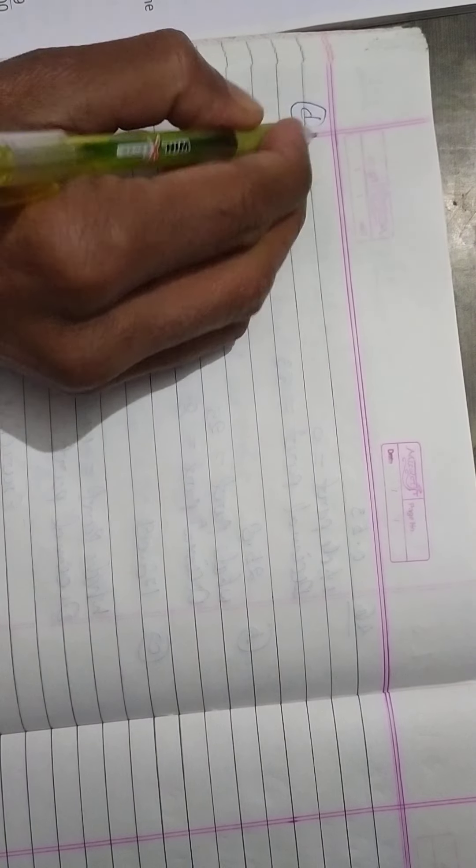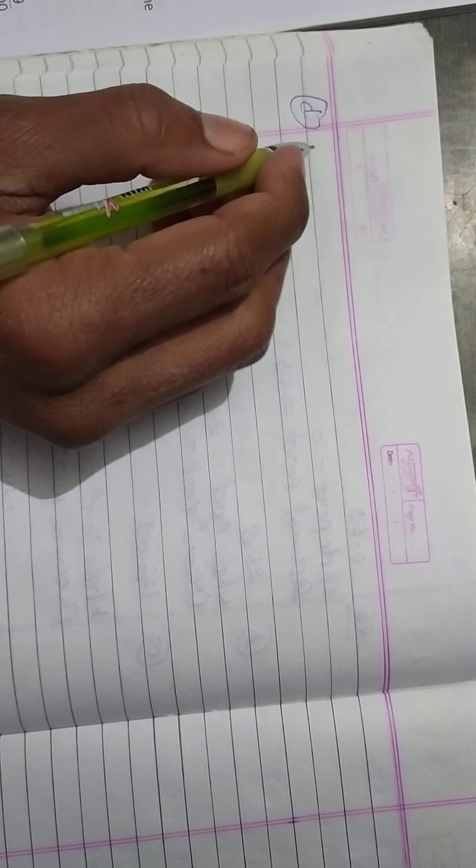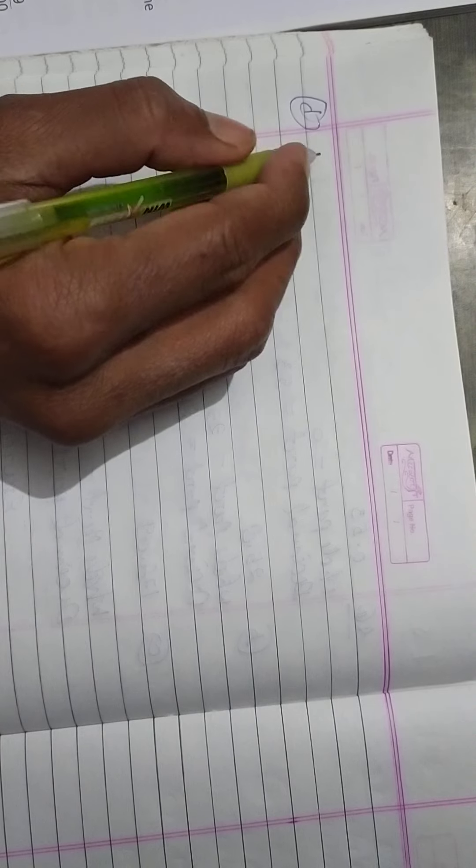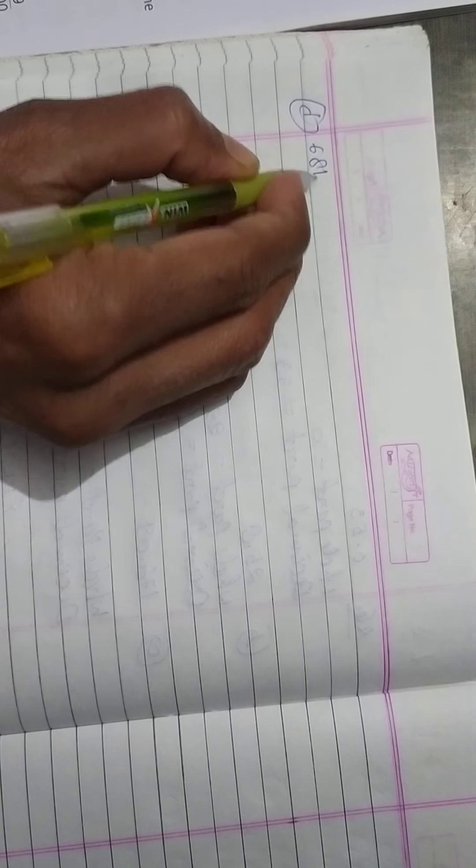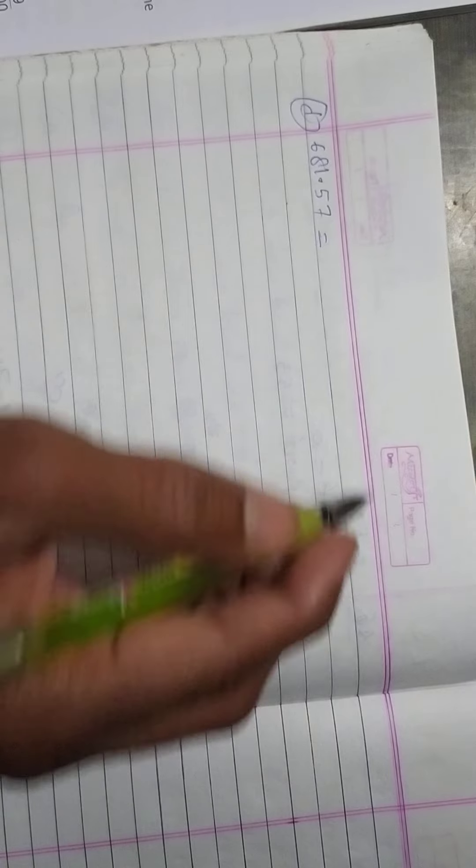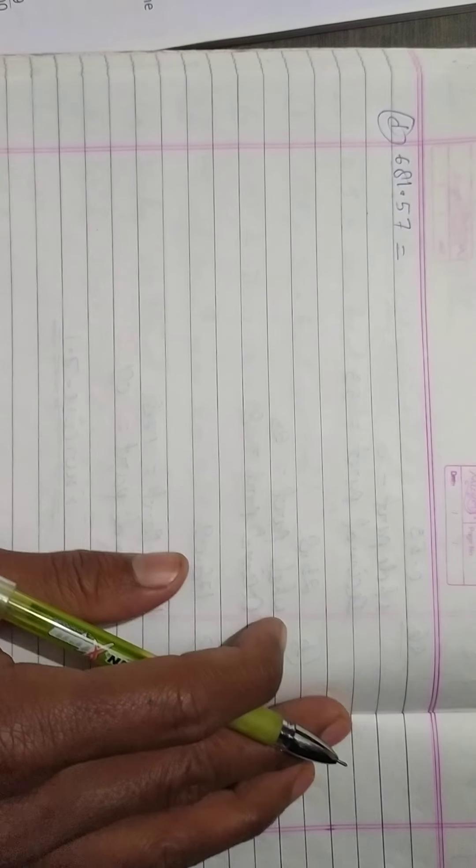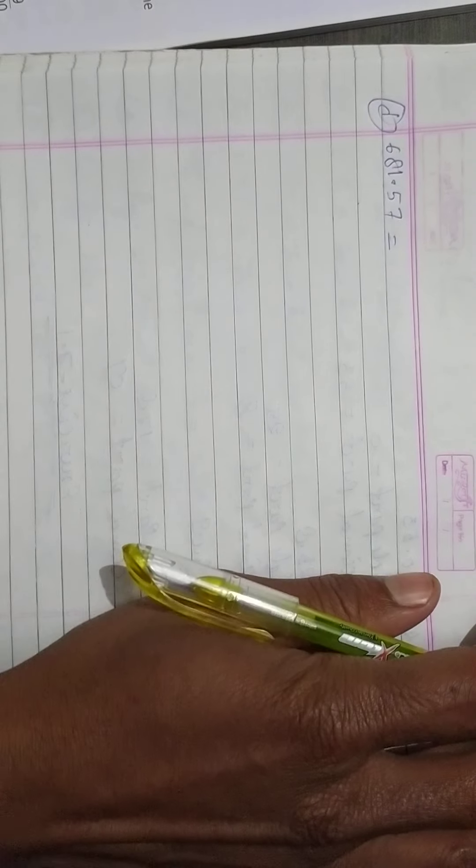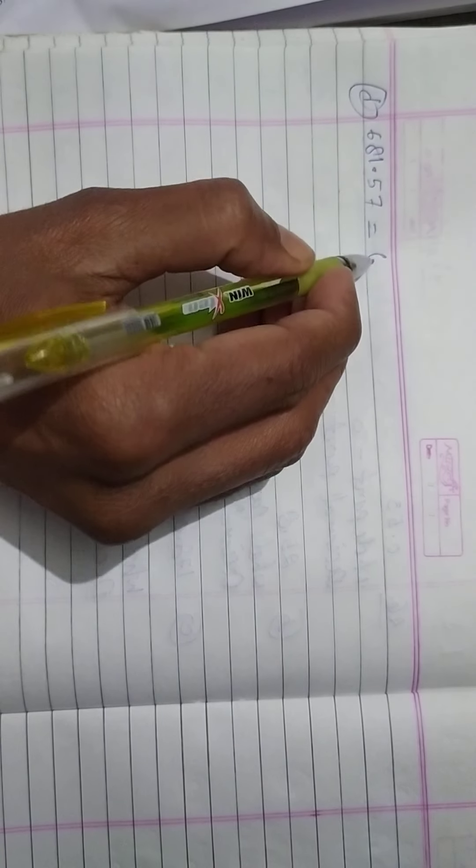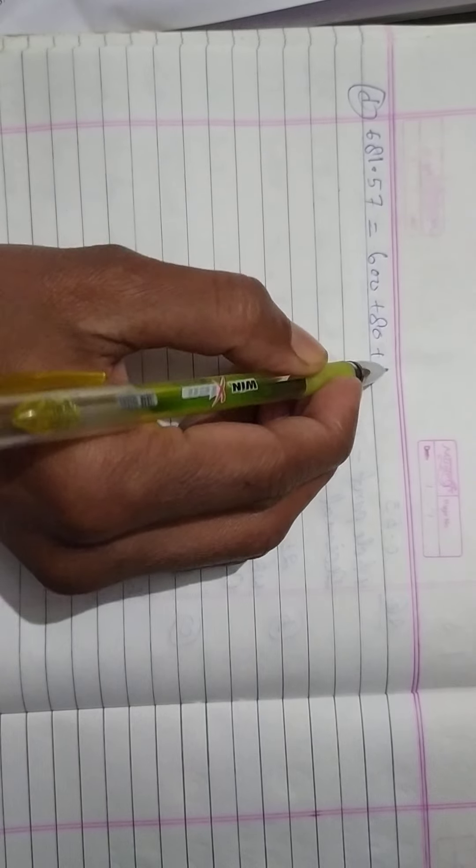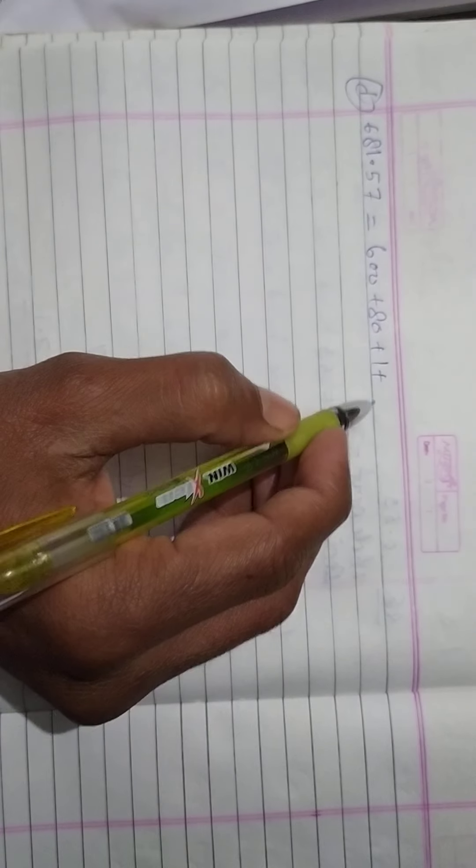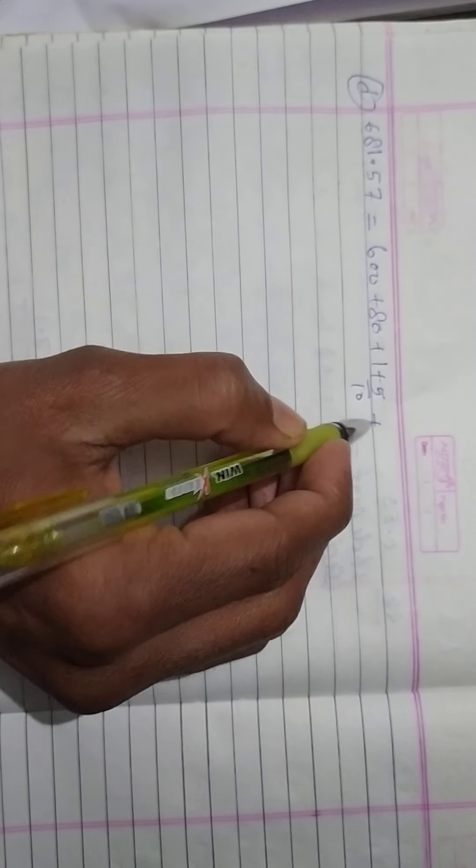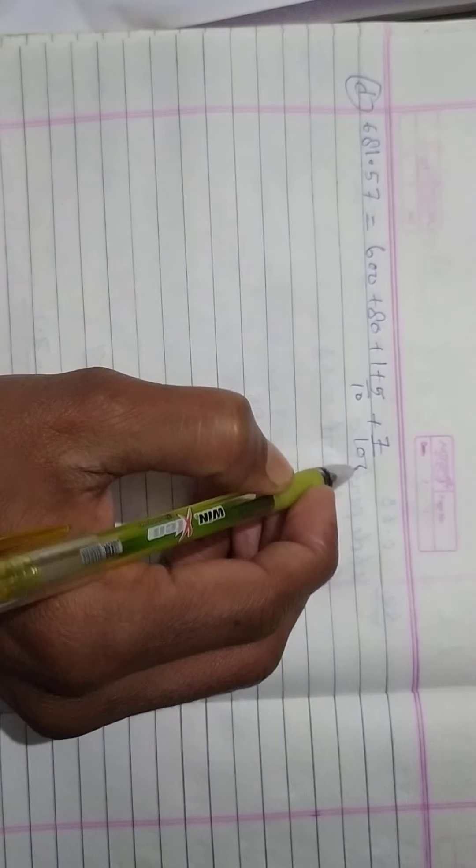Now to question number D. Question number D is 681.57. So here is 600 plus 80 plus 1, plus 5 to 10 place 5 upon 10, plus 700 place 7 upon 100, clear.